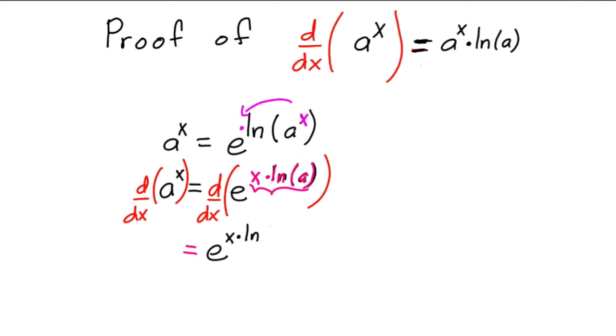times the derivative of that inside. The derivative of x times natural log of a, remember natural log of a is a constant, so it's going to be natural log of a times the derivative of x, which is equal to simply one.